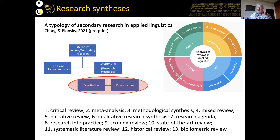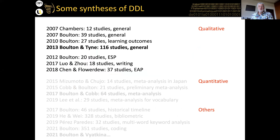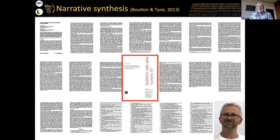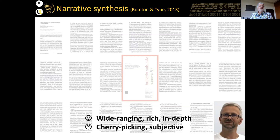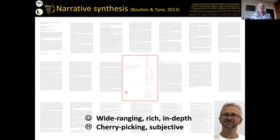The two main criteria are qualitative and quantitative. In DDL there's been quite a lot of syntheses. A qualitative research synthesis of DDL — one with Henry Tyne in 2013 looking at 116 studies — is what a narrative synthesis looks like: it's text. An advantage is it's wide-ranging, very rich, and you can go into a lot of depth. The disadvantage is there's an element of cherry-picking; you subjectively choose which studies and which bits to talk about.